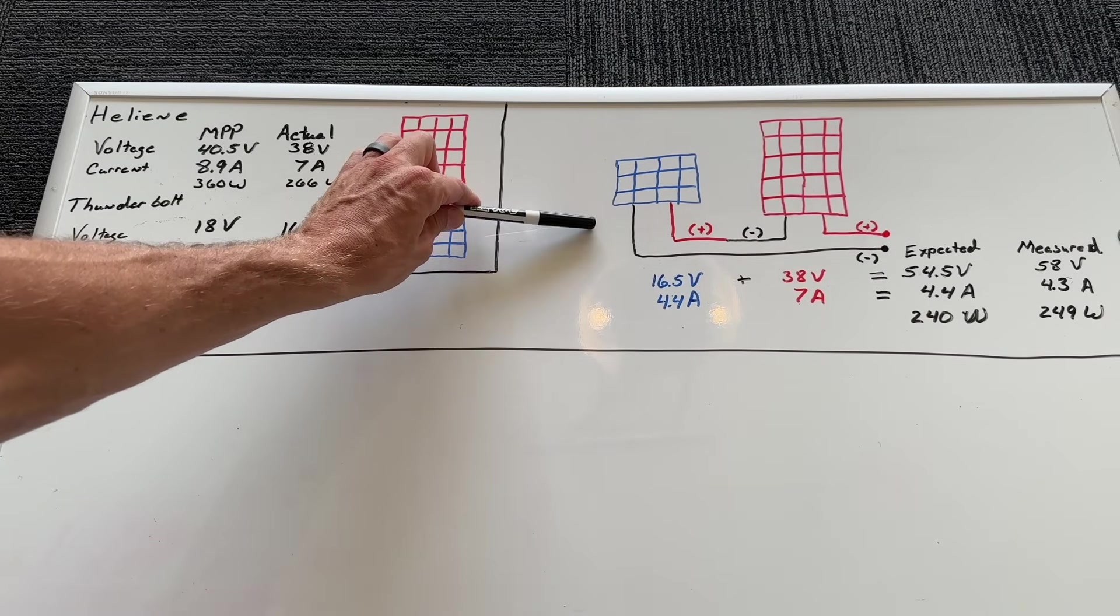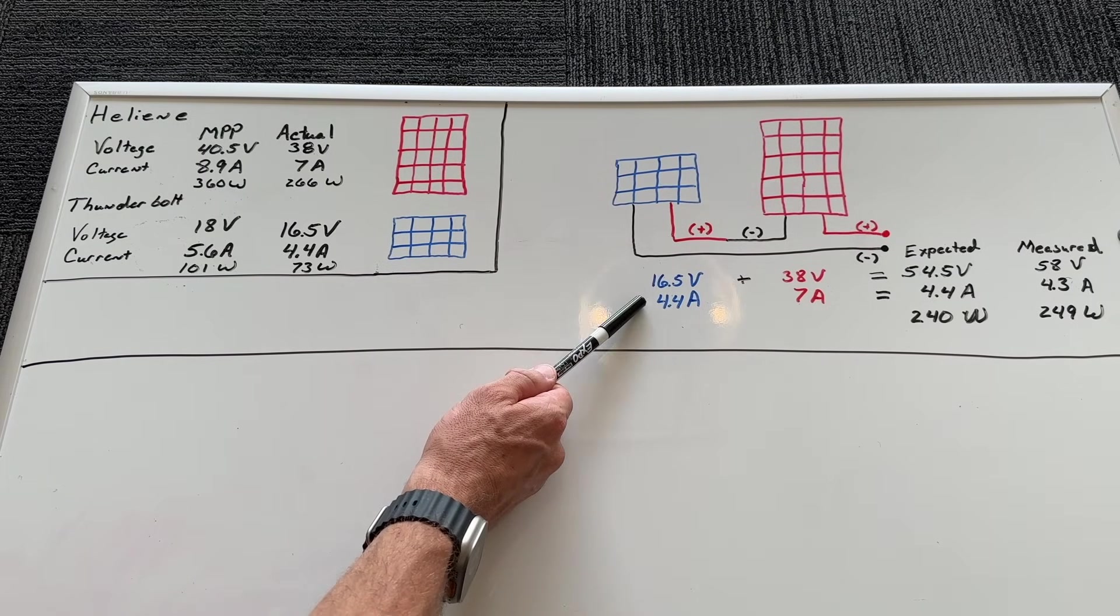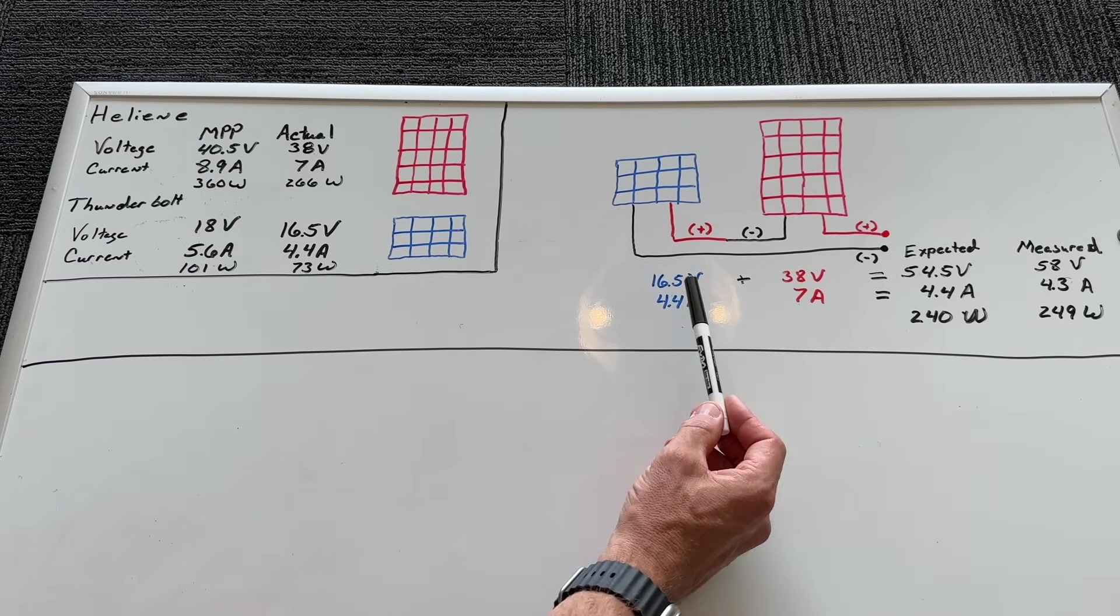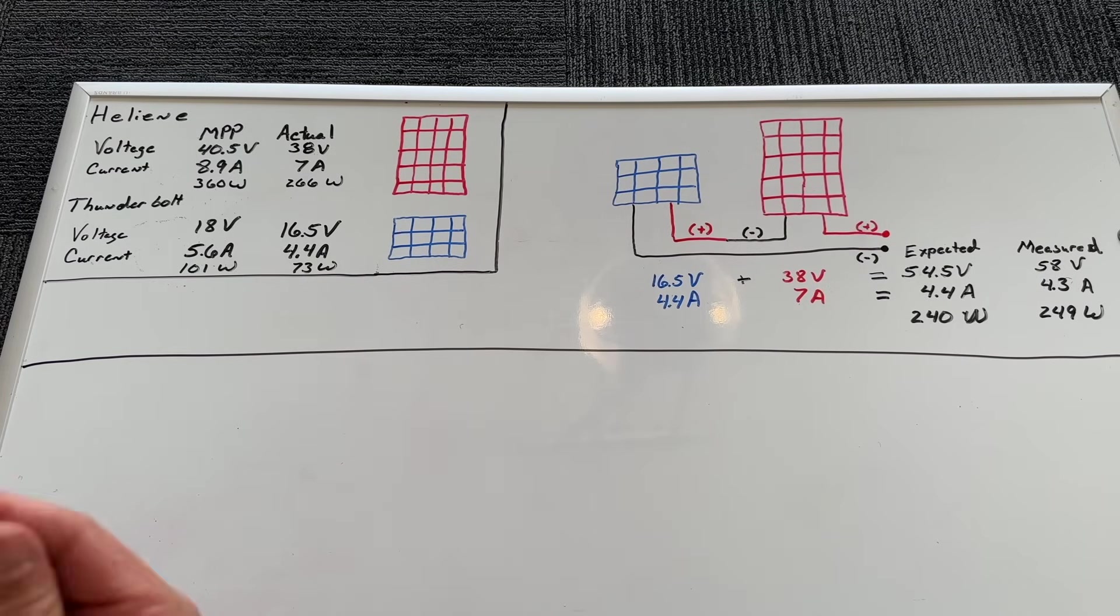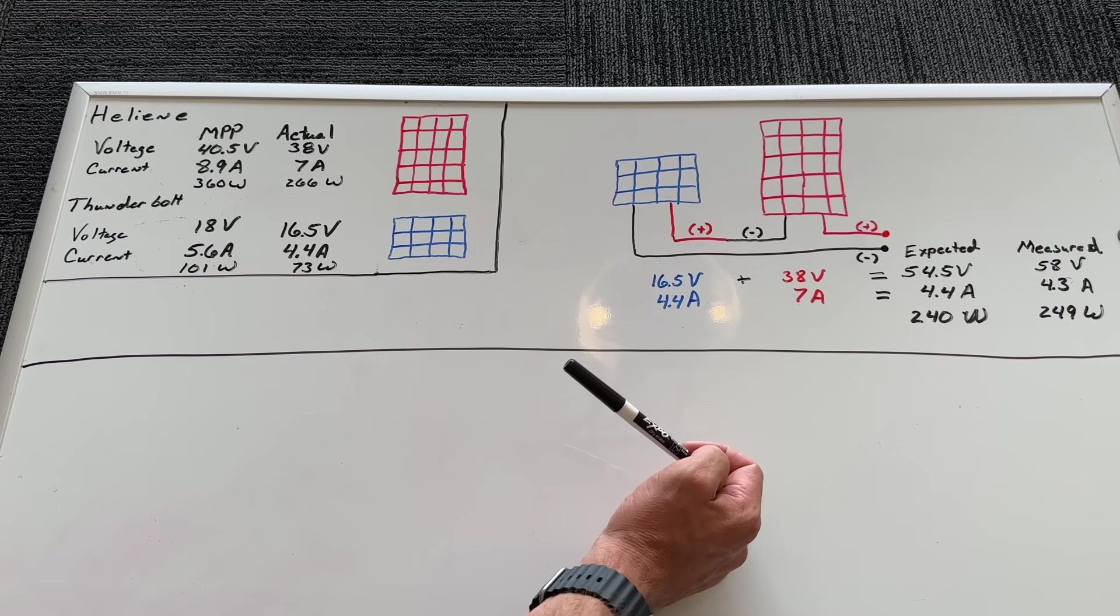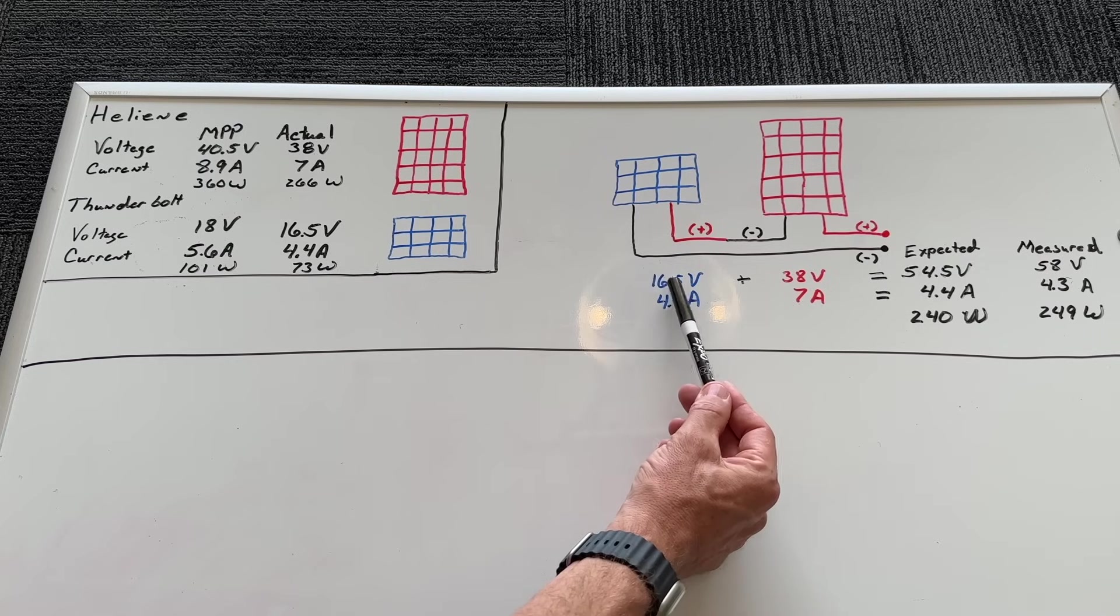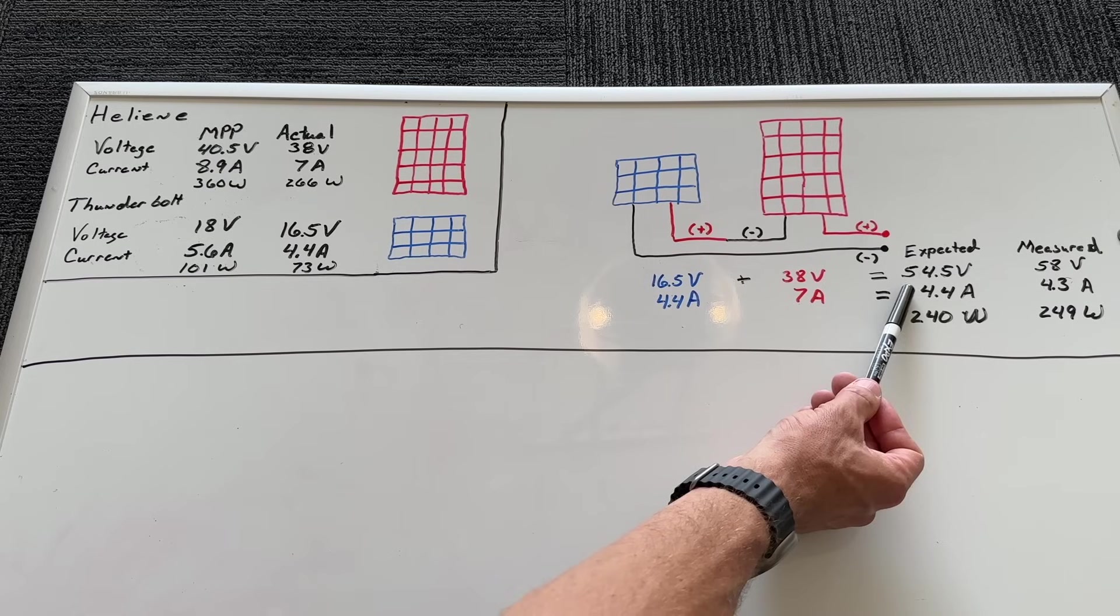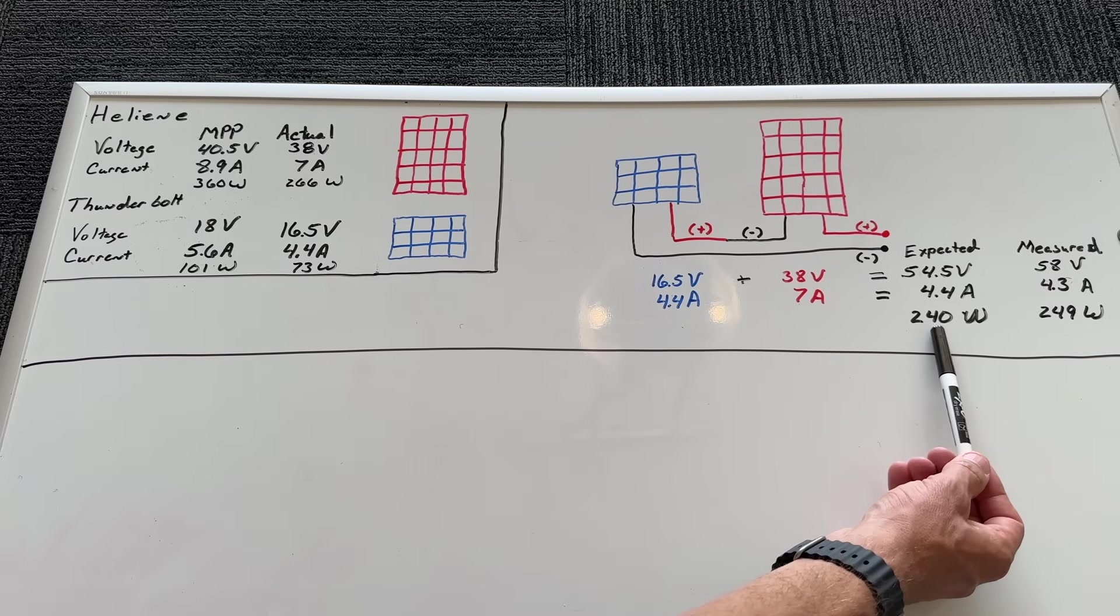That is obviously not ideal but it is expected once you understand what's going on. When we wire in series, remember you're going to add up the voltages. This is the voltage and the current that we measured earlier for the Thunderbolt and the voltage and current we measured earlier for the Helium. We're going to add up those voltages, so that's going to be around 54.5 volts. But when it comes to current, we do not have the same panels, so we are going to be limited by our lowest current. In this case it is 4.4 amps.